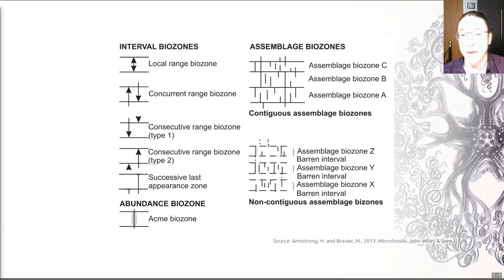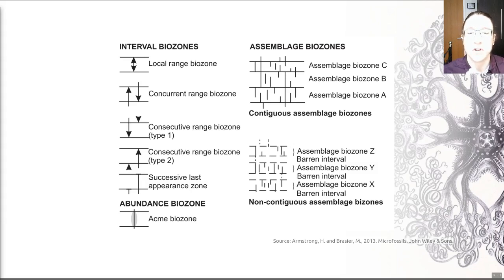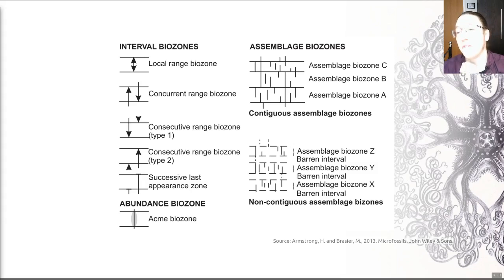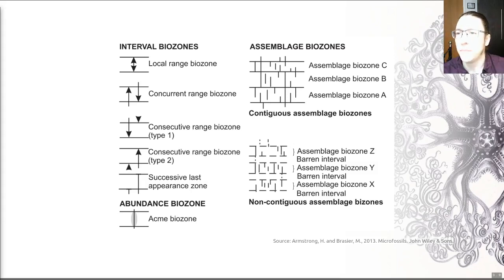I also wanted to highlight that we have a thing called an abundance or acme biozone. This is defined by the particular abundance of a certain species during a certain time interval, and it's subjective in nature. We may all differ in our assessments of relative abundance, and that limits the recognition and regional extent of these units. But occasionally in some particular basins, these are very, very useful. So there are all of these different ways of arranging how we split up the ranges of fossils to identify different zones.